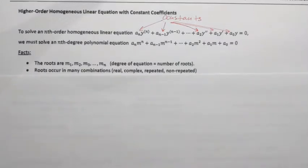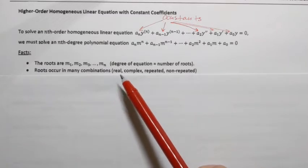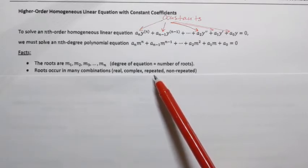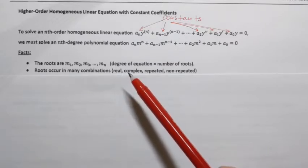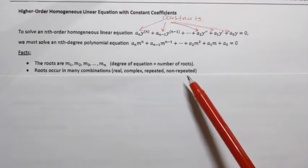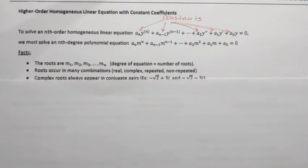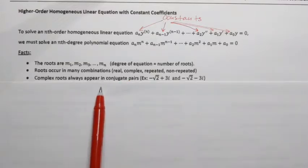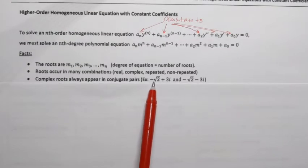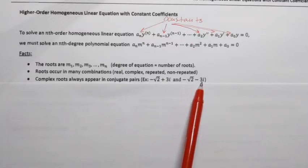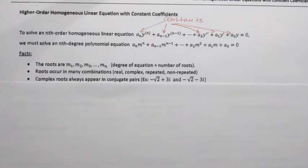We need to keep in mind that those roots can be different. There are different types of roots occurring in many combinations: real roots (real numbers), complex roots (complex numbers), and repeated roots — meaning a root can occur multiple times. For example, root 5 with multiplicity 3 means it repeats 3 times. Also importantly, complex roots always appear in conjugate pairs. So if one root is negative square root of 2 plus 3i, it's guaranteed there's also a root negative square root of 2 minus 3i.